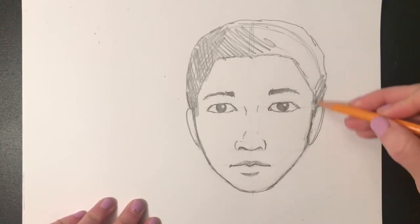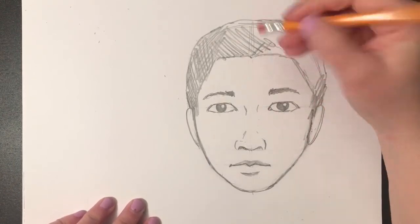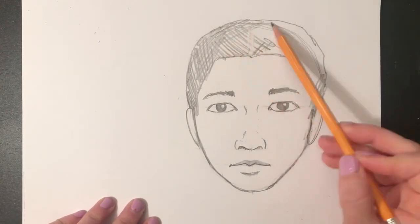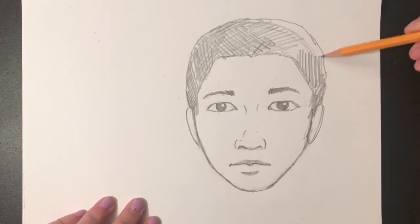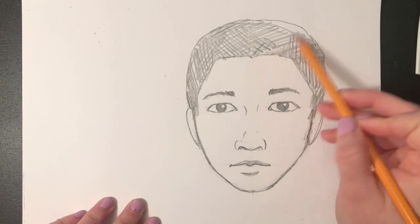You can change the type of line you use as you're drawing the hair to communicate different textures of hair, whether it's straight or wavy or curly. And here I'm just adding a little shading to darken the hair.